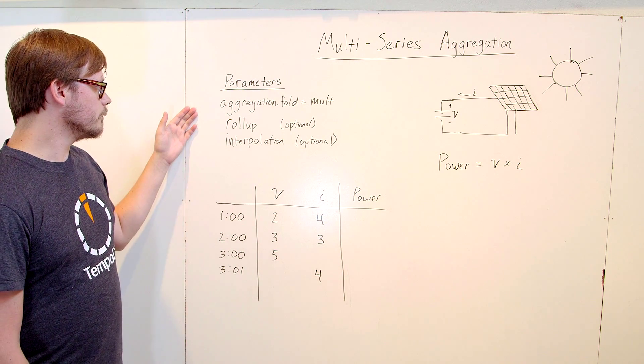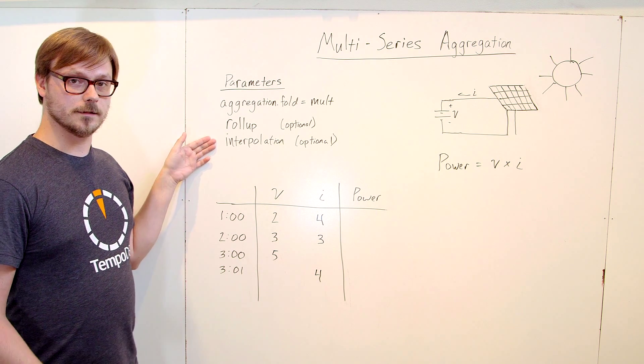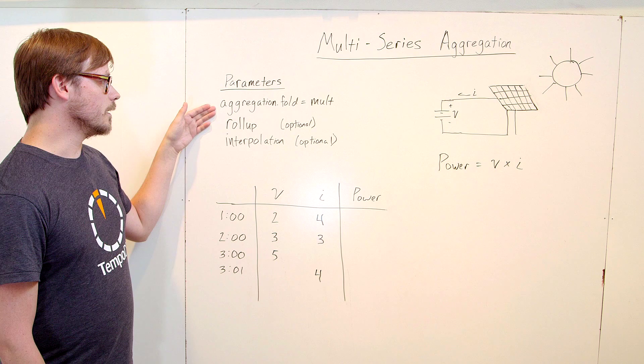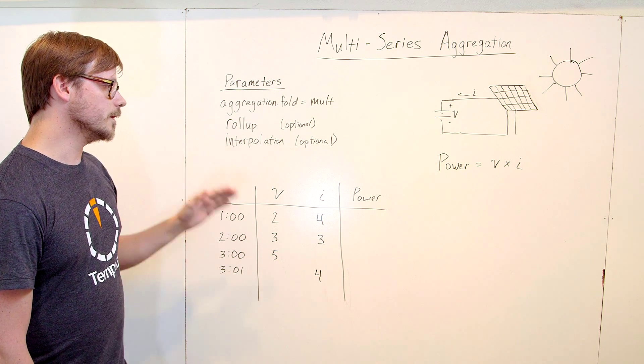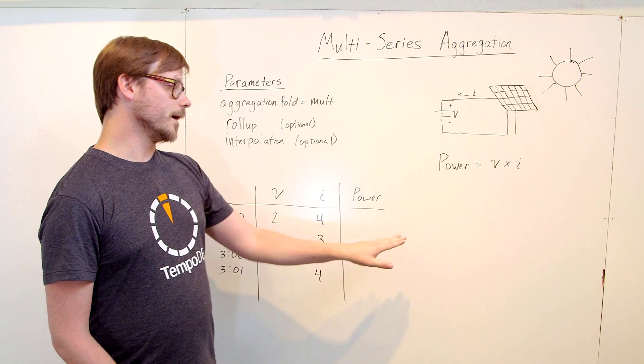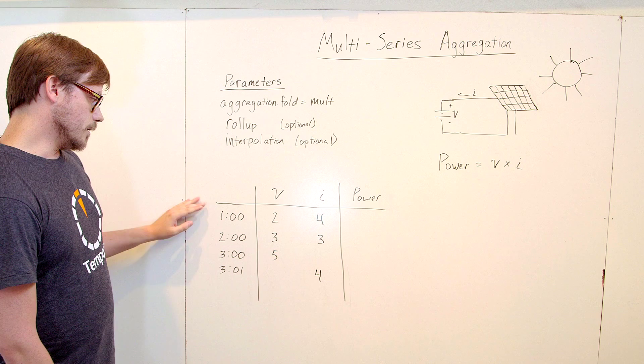So the parameters for this endpoint, we've introduced a new one. You can do rollups and interpolation like the single series, which are covered in other videos. We've added a new one called aggregation.fold. And for this example, we would use the folding function mult, which multiplies the values. So let's take some data here.